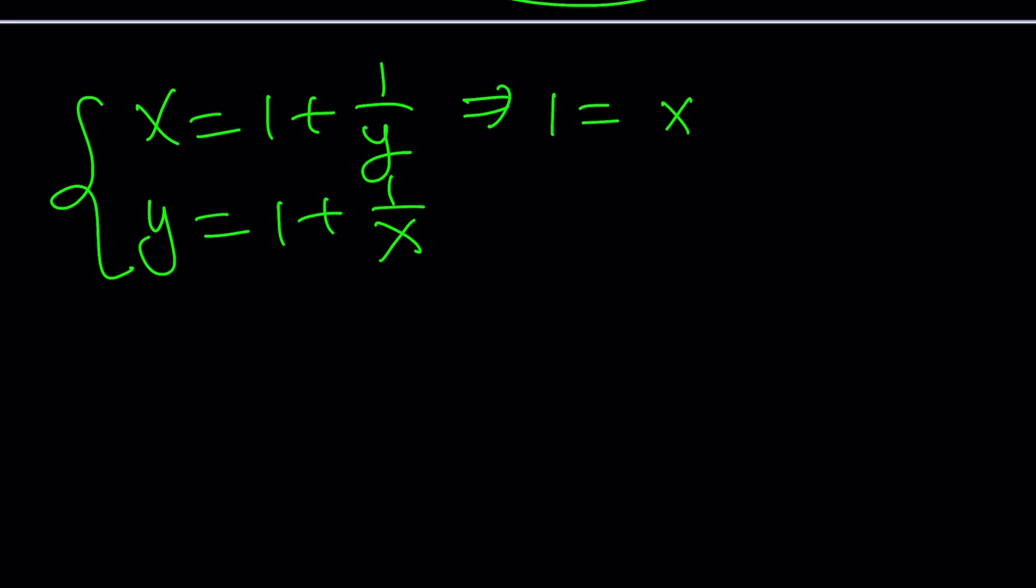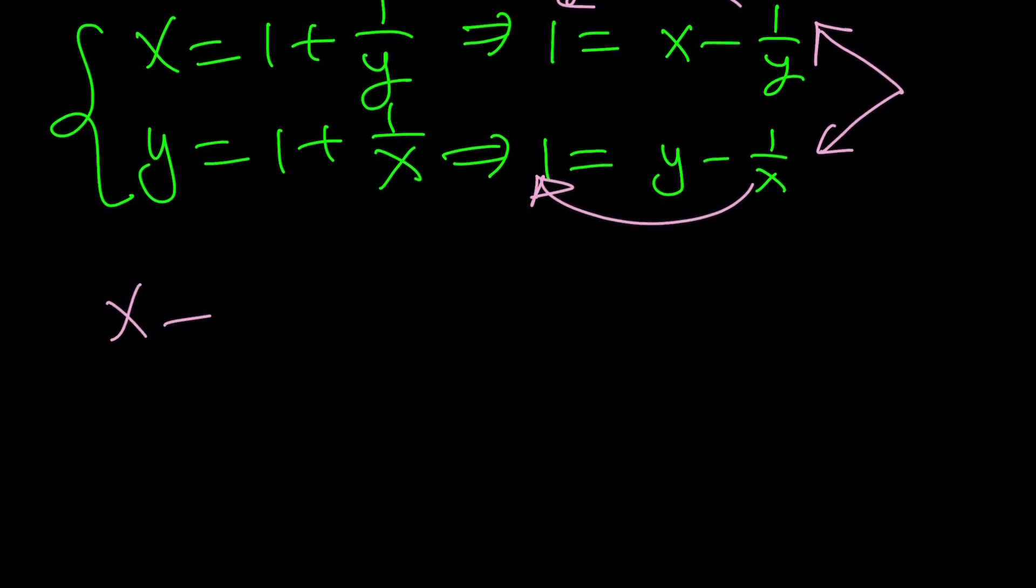So what does this mean, though? This means that I can write 1 in two ways. 1 is x minus 1 over y. From the second equation, 1 is y minus 1 over x. Which means these two things are equal. Because if two things are equal to the same thing, then they're equal, a basic principle. So here we're getting x minus 1 over y equals y minus 1 over x. I know some people are going to question this method because you had a single variable. Why did you go from a single variable to two variables? Because this gives us a really nice system. And that's why.